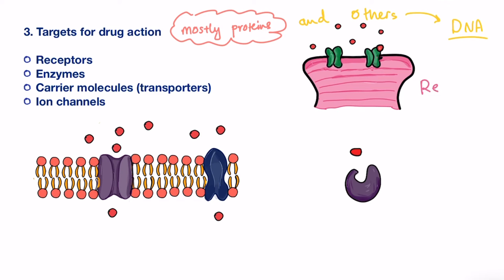Receptors serve as recognition sites for drugs and other endogenous ligands. Once the drug binds to the receptor, a train of reactions will be initiated inside the cell leading to a change in cell function.